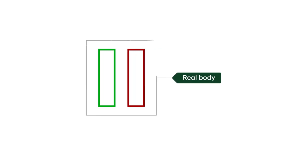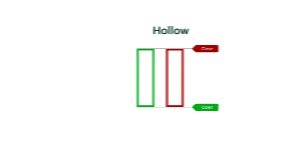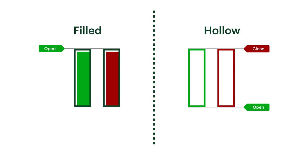The wide part of the candlestick is called the real body, and it gives us the open and close range of the day. When the candlestick is hollow, the lower limit of the real body tells us the price at which the stock opened, and the upper limit tells us the price at which it closed. When the candlestick is filled, the upper limit of the real body indicates the open, and the lower limit, the close.